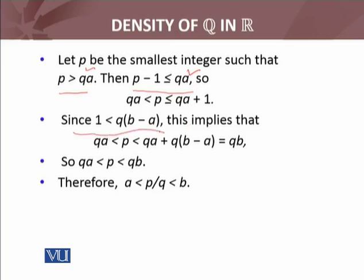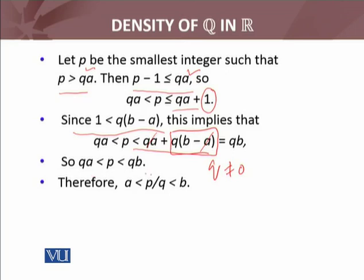Since 1 is less than q times (b minus a), we have qa plus 1 less than qb. Combined with p less than or equal to qa plus 1, this gives p less than qb. Therefore, dividing through by q, we obtain a less than p over q less than b. By applying the Archimedean property and arithmetic multiple times, we reach this result.